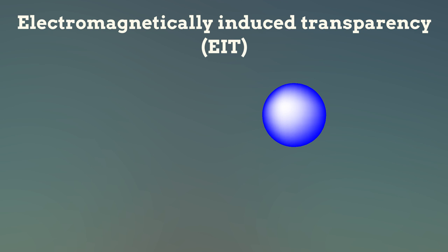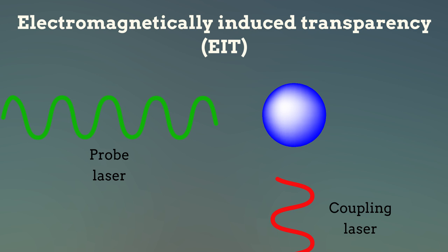EIT occurs when two lasers, a coupling laser and a probe laser, are specially tuned so that individually, either one can excite atoms in a vacuum chamber to a precise energy level.